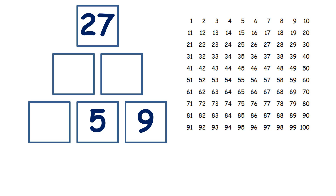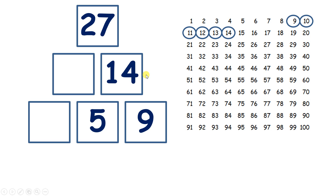Now this question is a bit trickier. Which square do we need to solve first? Well, the only square that we can answer is this one here, because we can add five and nine. So if we start on nine and count on one, two, three, four, five, we get to 14.